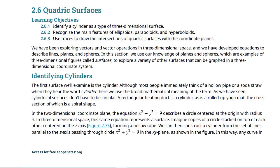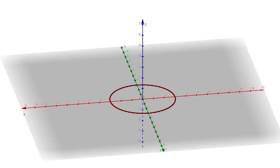We're going to start out by identifying cylinders. I'm using the free textbook from OpenStax.org. The first surface we'll look at is a cylinder. Most people immediately think of a hollow pipe or a soda straw when they hear the word cylinder, but in math it has a broader meaning. We'll start simply: in the two-dimensional coordinate plane, x² + y² = 9 describes a circle centered at the origin with radius three.